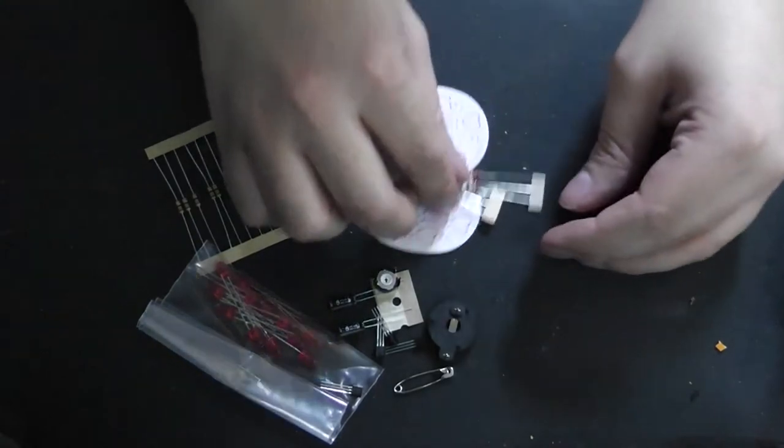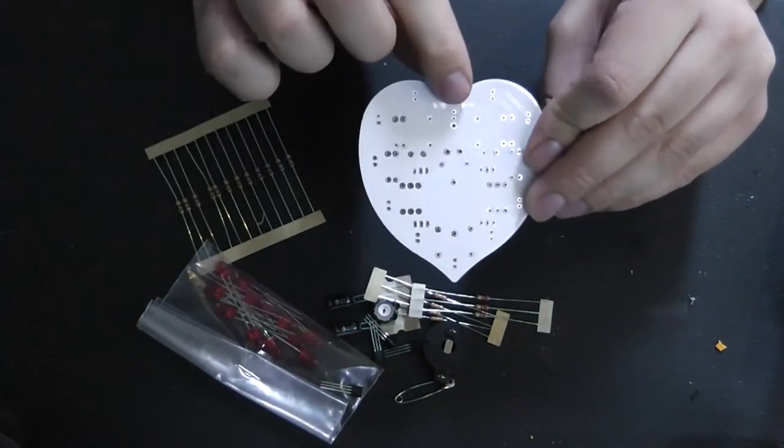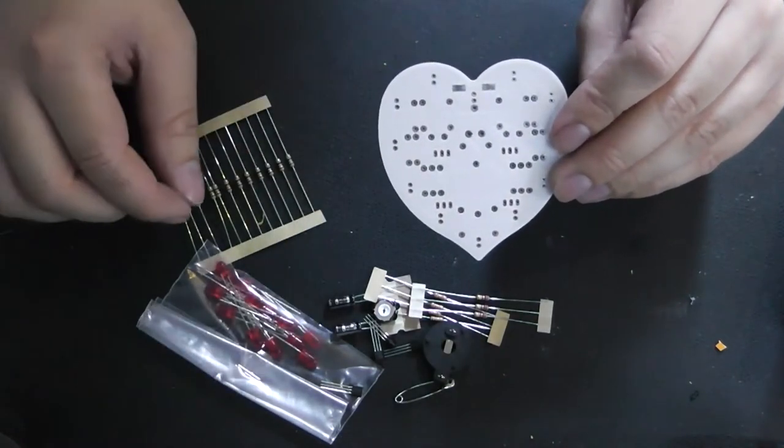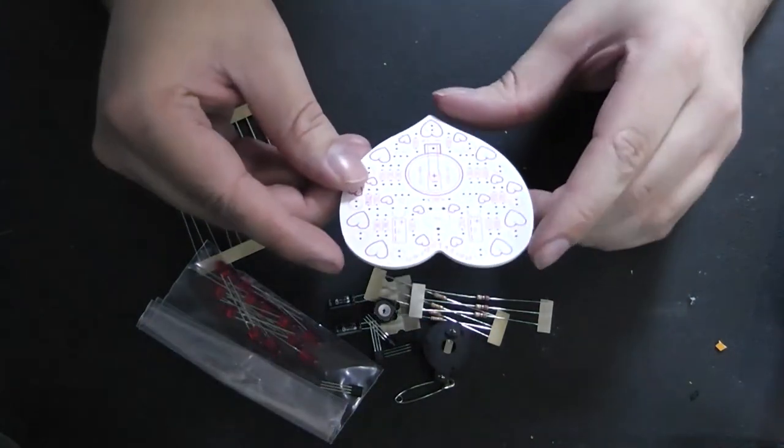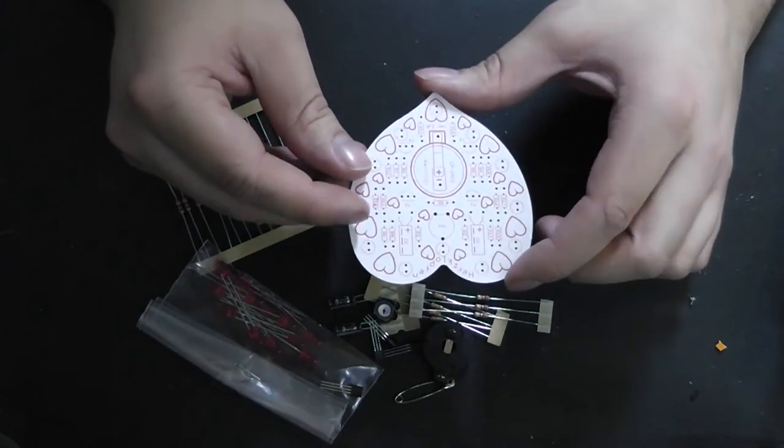What do we need the safety pin for? Well, let's take a look at the printed circuit board. Here we have two solder pads where we can attach the safety pin to mount this little circuit board onto our chest, for example.